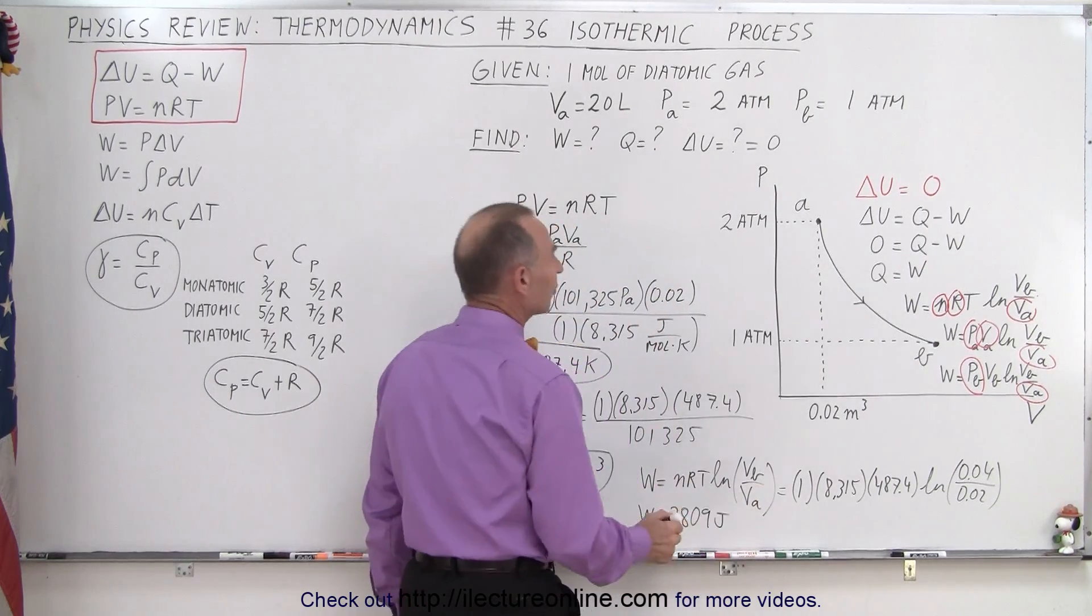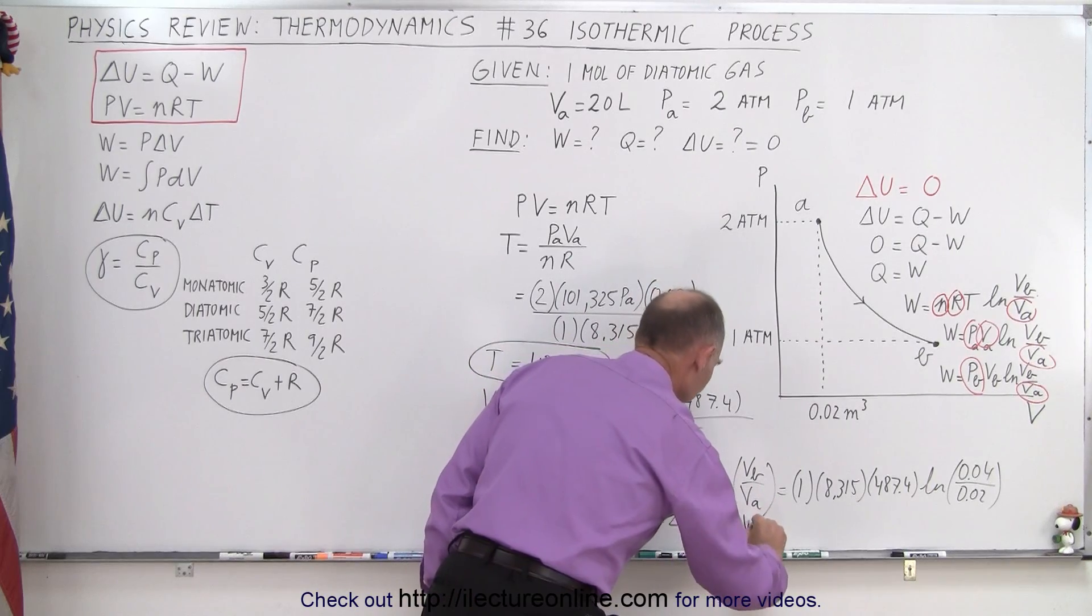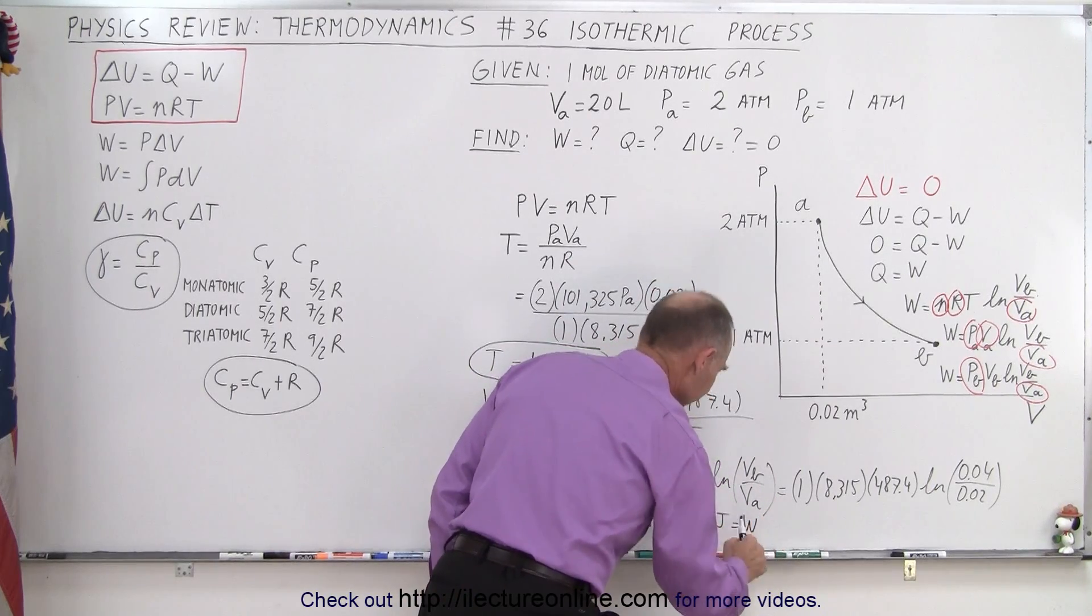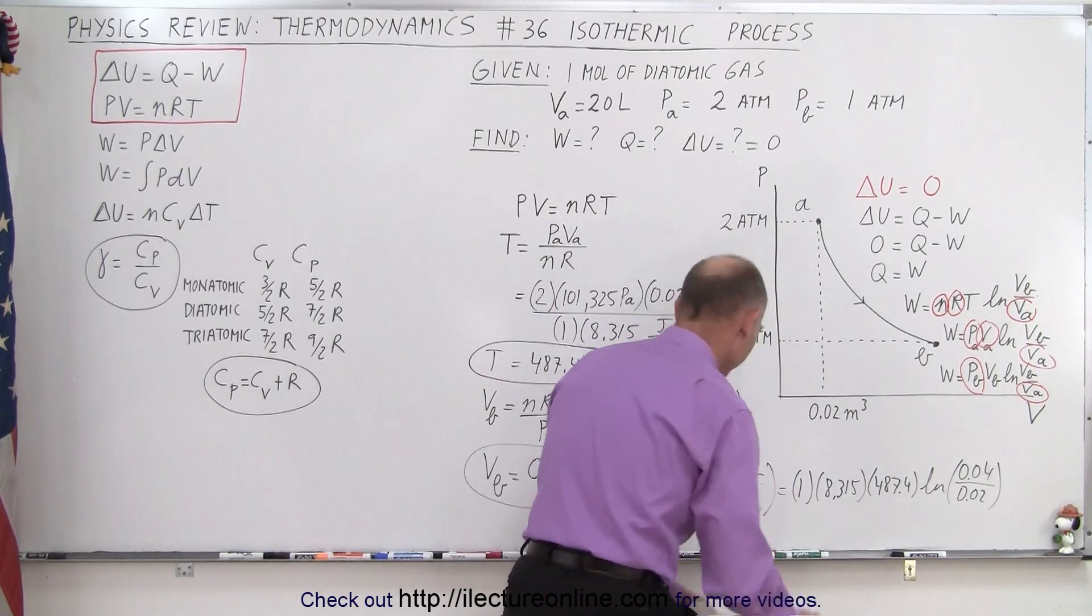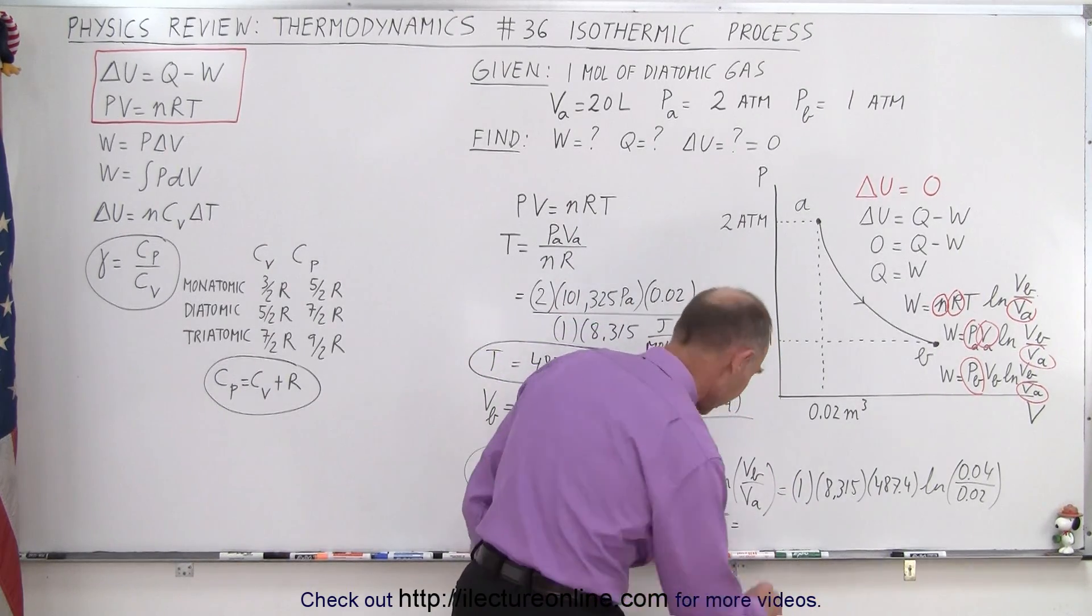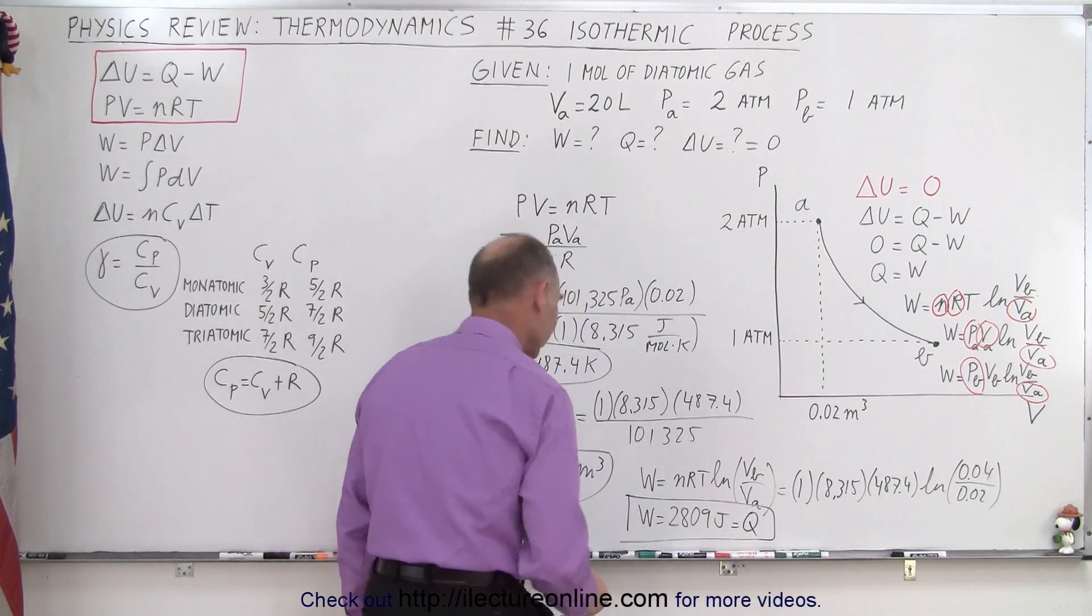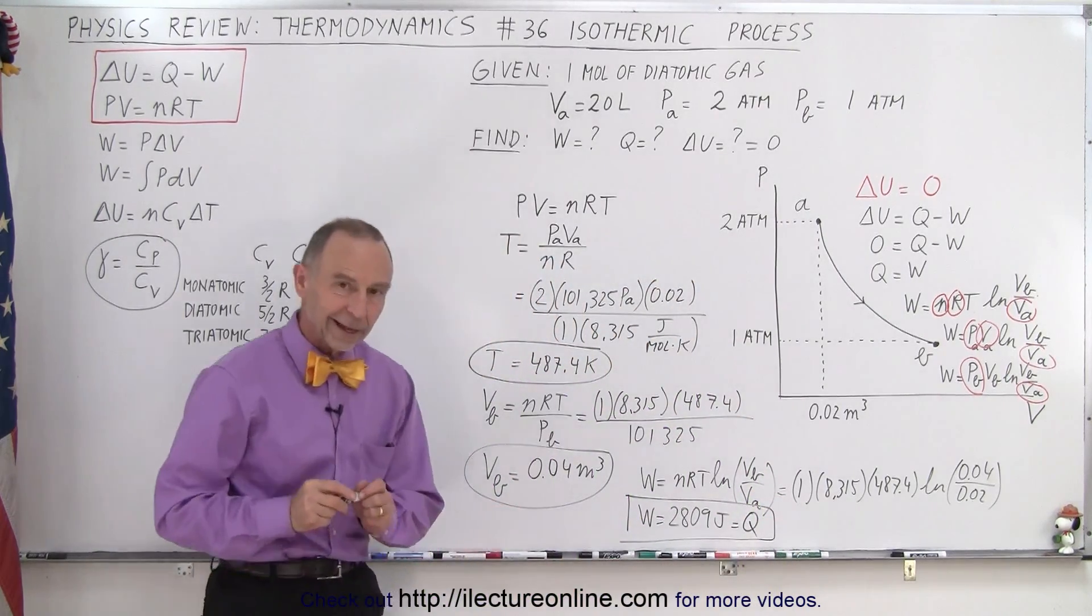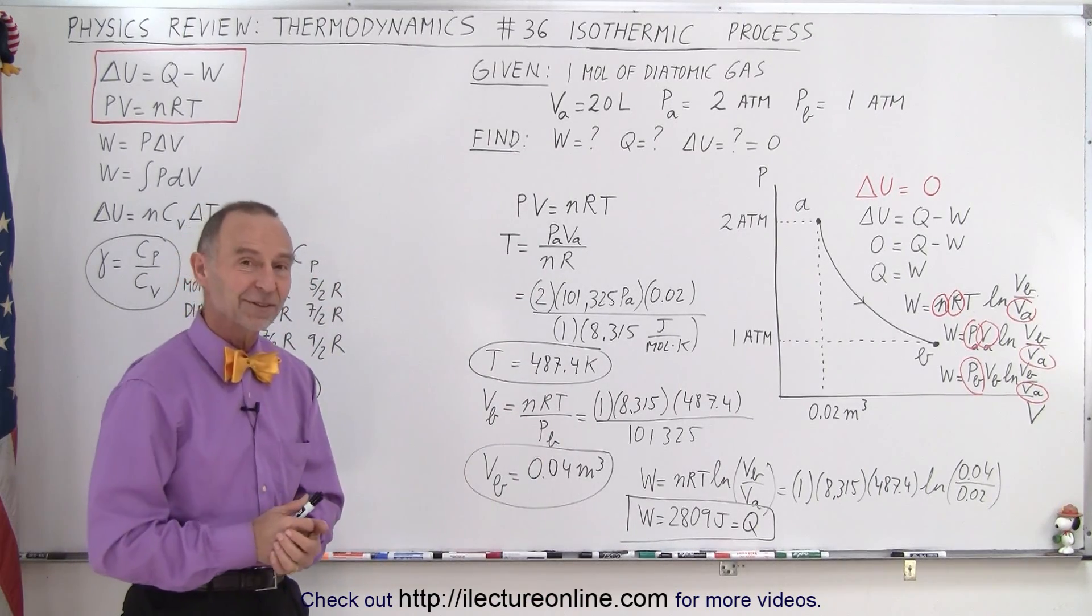And then of course, since the work done is equal to the heat added, that is also equal to Q. And that gives us the final answers for both the work done and the heat added to the gas. And that is how it's done when we have an isothermic process.